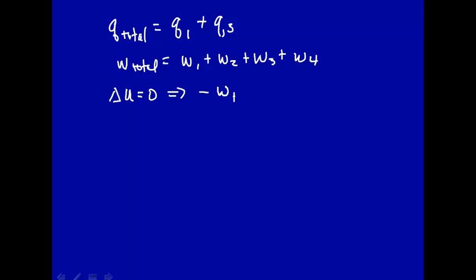Now since the change in internal energy U is zero, this implies that work total is equal to the total heat transferred, because remember when delta U is zero, the internal energy change is zero, minus W equal Q. This is just equal to Q1 plus Q3.